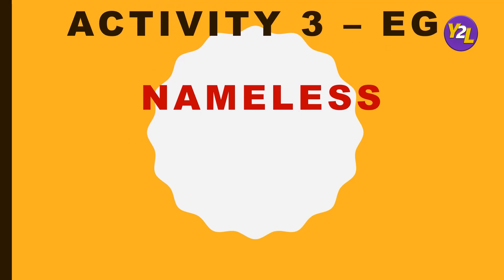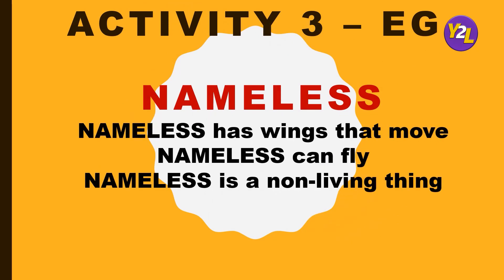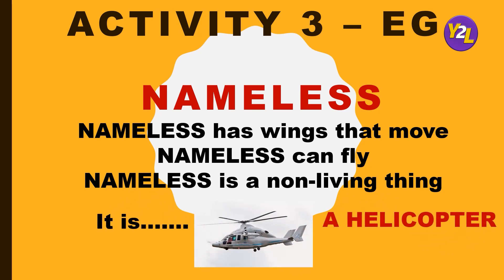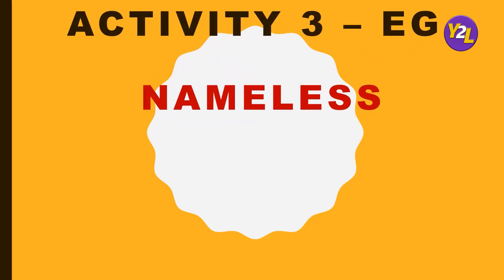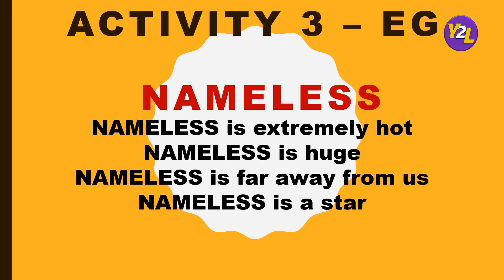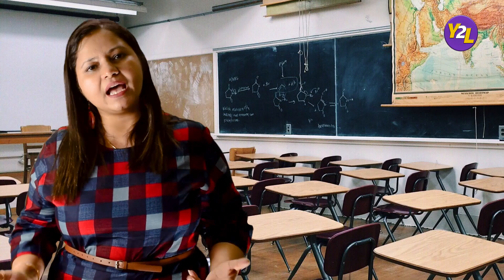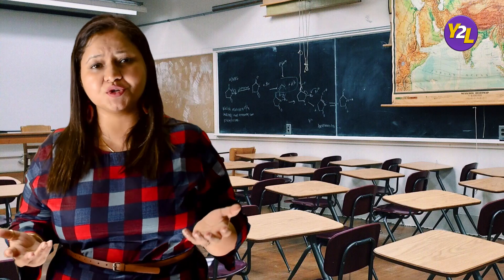For example: Nameless has wings. Nameless can fly. Nameless is non-living. Yes, it's a helicopter! Or: Nameless is extremely hot. Nameless is huge. Nameless is far away. Nameless is a star. Oh, it's the sun! That is how you can build your story or theme.